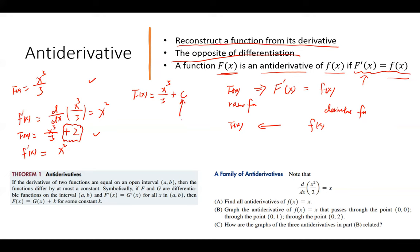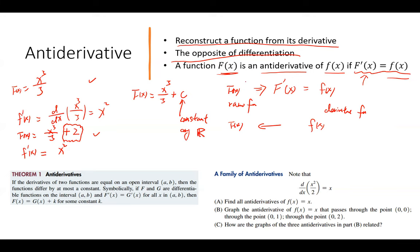Taking differentiation going left to right — from the raw function to the derivative function — gives one definite result. But going back from the derivative to the raw function, there are infinitely many mappings. Many raw functions correspond to the same derivative function. If two functions f and g have the same derivative, then they differ only by a constant k.